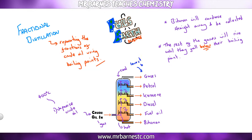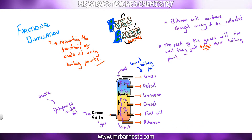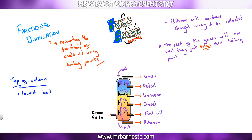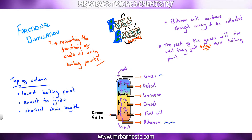From that you can work out that the gases have the lowest boiling point because they're still gas at room temperature. At the top of the column: it has the lowest boiling point, it's the easiest to ignite, it has the shortest chain length — that is the size of the molecule, the number of carbon atoms — and it's also the least viscous, meaning it's the runniest.